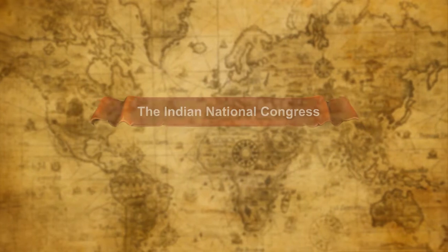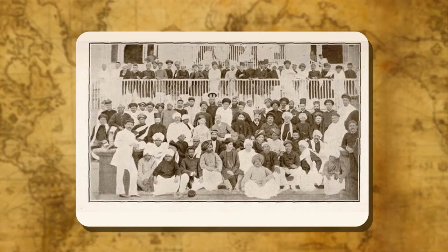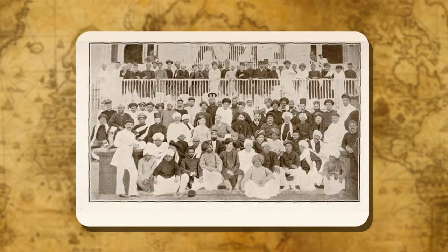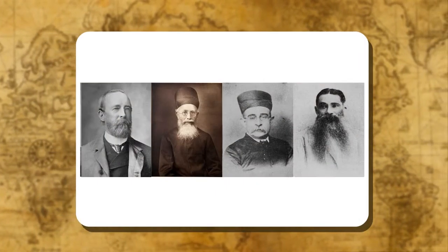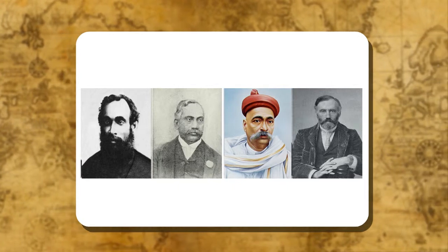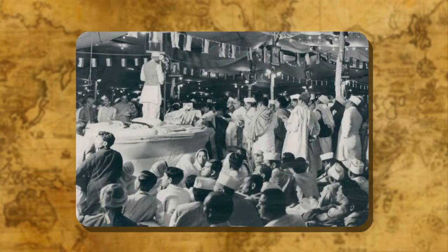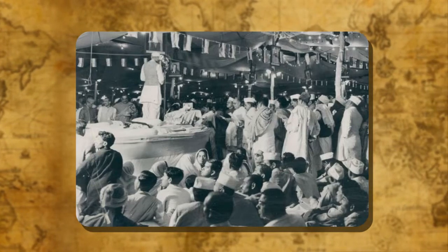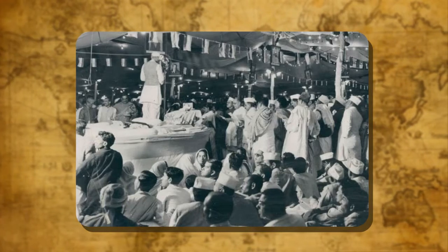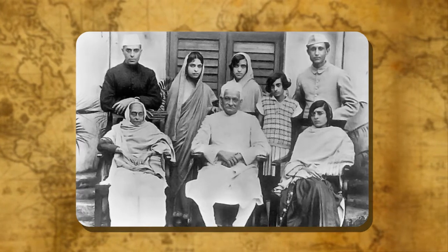The Indian National Congress, also known as the Congress and abbreviated as INC, is a major political party in India. It is the largest and oldest democratic political party in the world. Founded in 1885 by Alan Octavian Hume, Dadabhai Naoroji, Dinsha Vacha, Womesh Chandra Banerjee, Surendranath Banerjee, Manmohan Ghose, Mahadev Govind Ranade and William Wedderburn, the INC became the leading organization of the Indian Independence Movement with over 15 million members. After independence in 1947, it became the nation's dominant political party, led by the Nehru-Gandhi family for the most part.